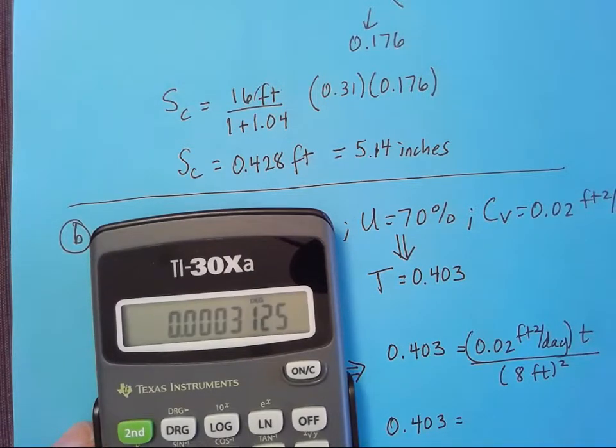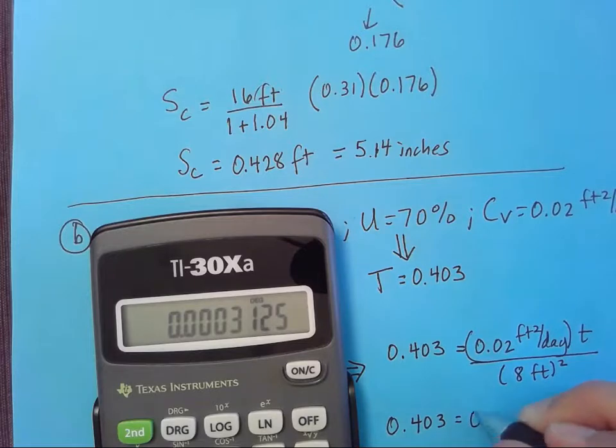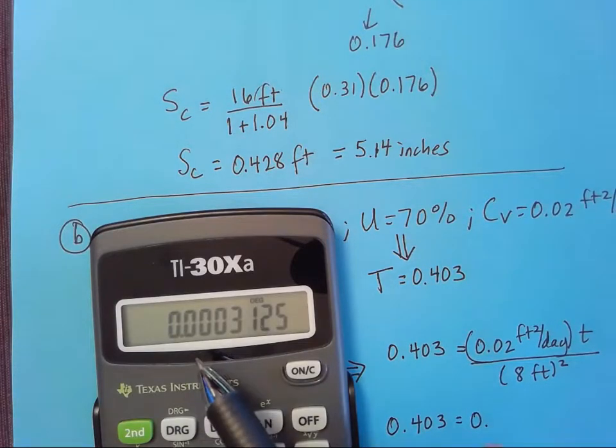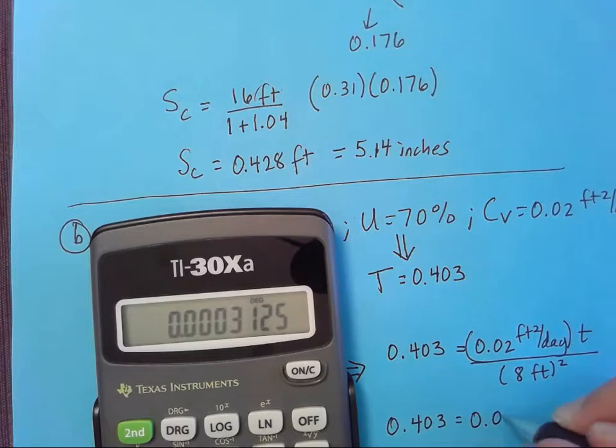So I'll leave this as 0.403. And I'll go ahead and solve that 0.02 divided by 8 squared. Well, that's 64. That's going to be nice and small. This is a part where it's really important to count those zeros carefully. I'm just going to write it all down. 0.0003125 t.